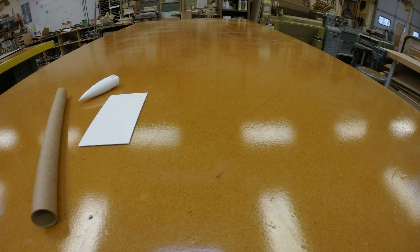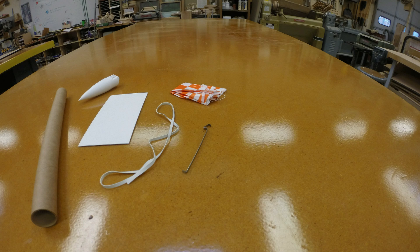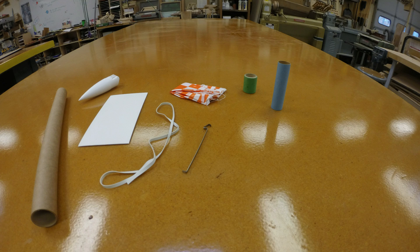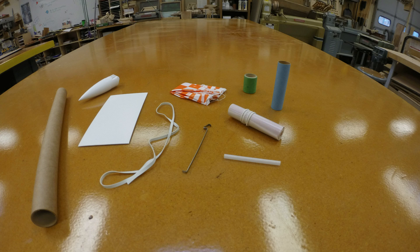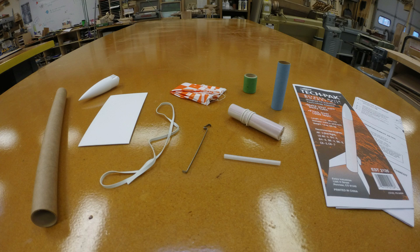First make sure your kit has a body tube form, a nose cone, fin stock, a shock cord, an engine hook, a parachute, a green adapter tube, a blue engine tube, a launch lug, a body tube wrap, and a set of instructions.